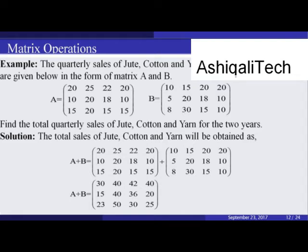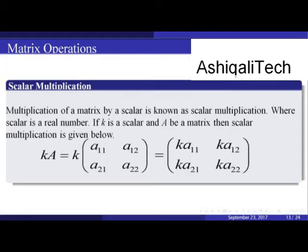The quarterly sales of jute, cotton, and john for the years 2002 and 2003 are given in the form of matrices A and B. To find the total quarterly sales for both years, we compute A + B by adding the corresponding entries of matrix A and matrix B to get the resulting matrix.